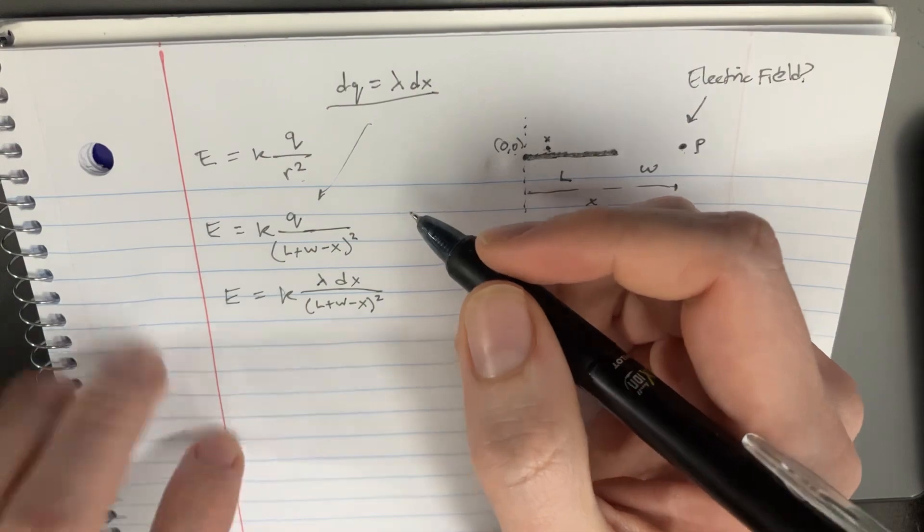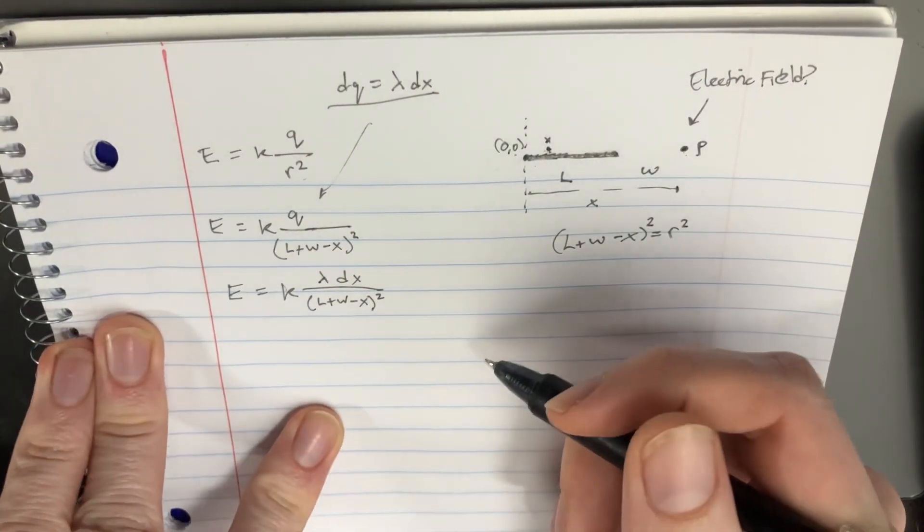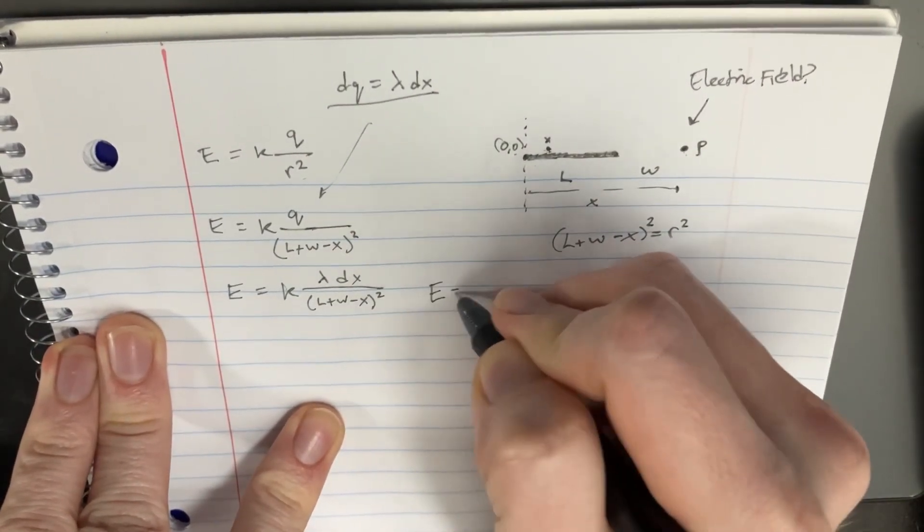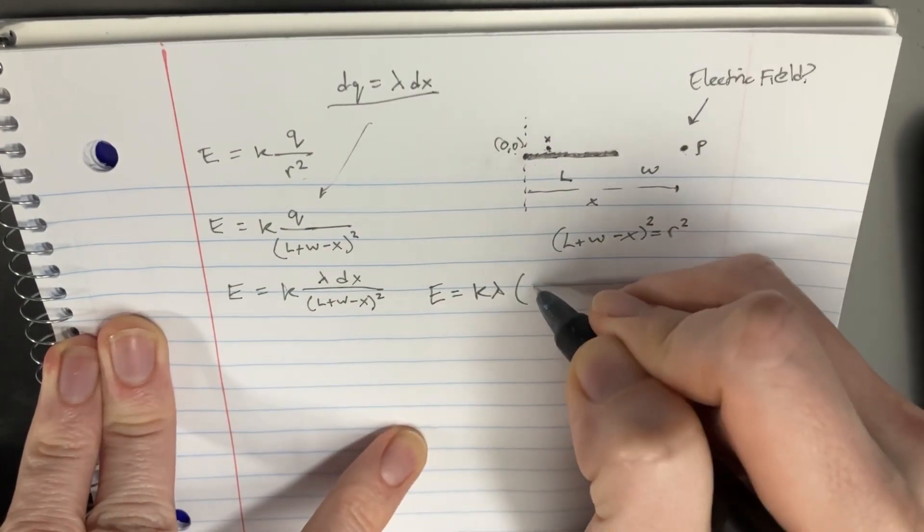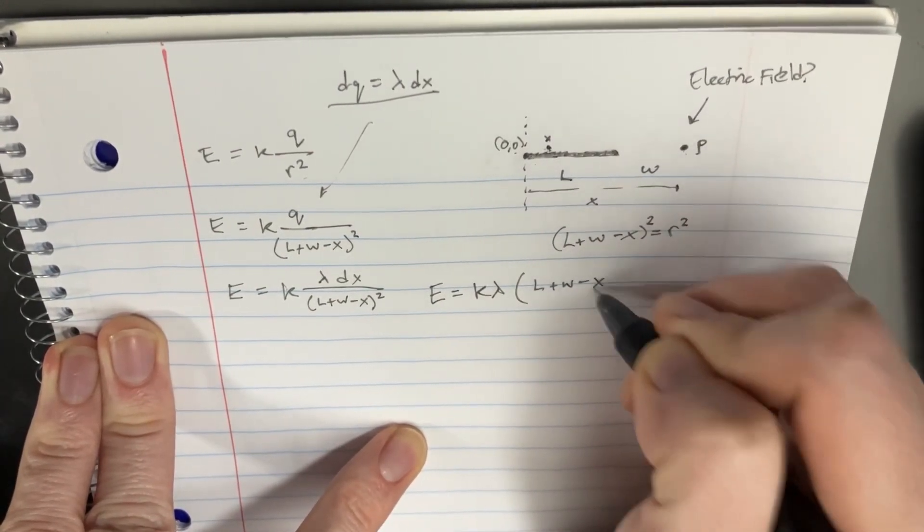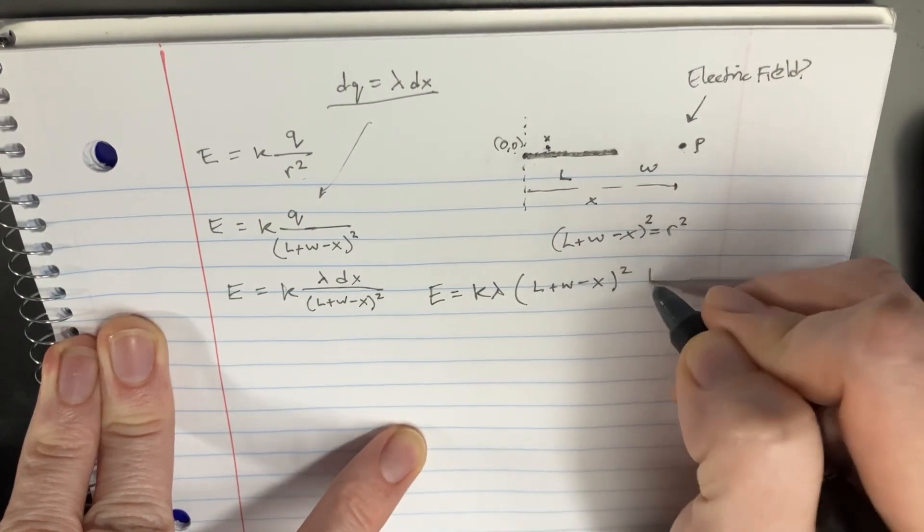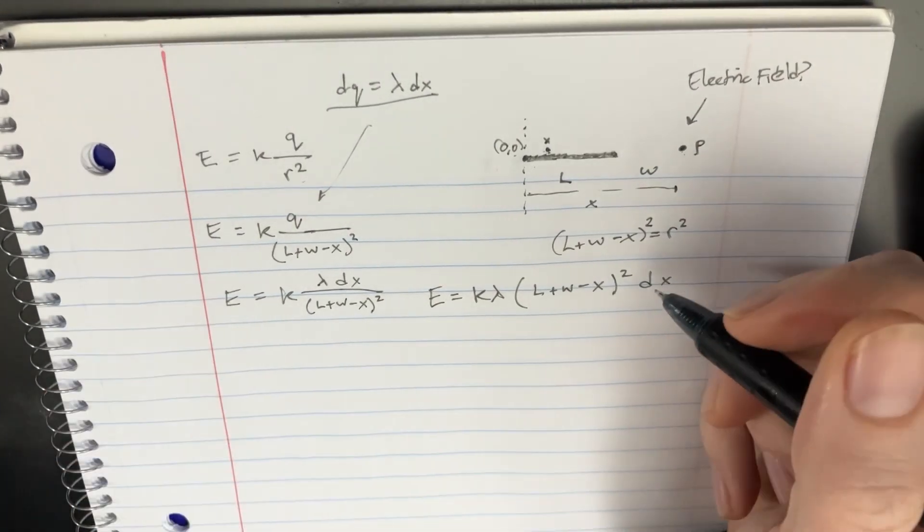And now we're ready to integrate. I know it doesn't seem like much, but it's actually just going to be like this. So K lambda, and then we're going to rewrite this part as L plus W minus X squared DX. And now here's the interesting thing.